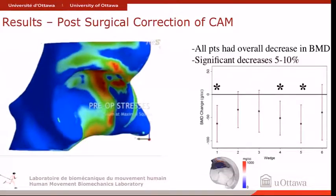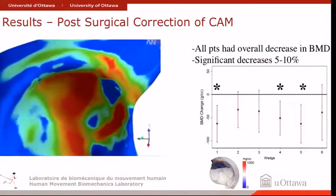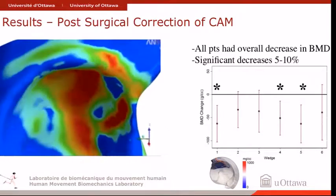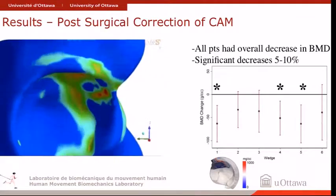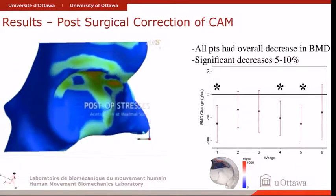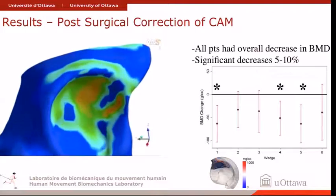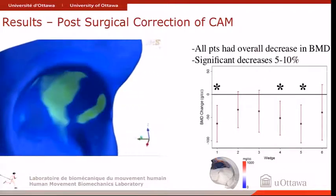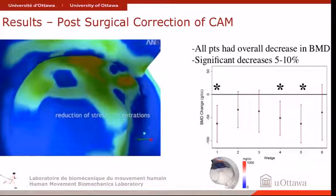When you look at pre-operative stresses in the modeling, this is prior to surgical correction. These patients had segmented bone densities done pre and post. Once you've corrected the deformity, you can see the stresses are relieved significantly. We've actually been able to show an alteration in bone density on the acetabular side of about 5% to 10% decrease after surgical correction of the cam deformity, which correlates well with the FVA modeling — validating both the in vivo findings and the model post-surgical correction.